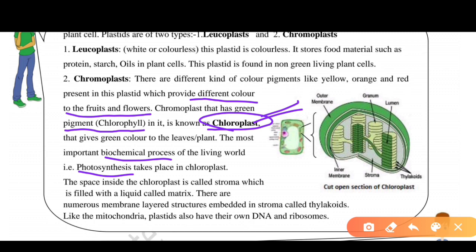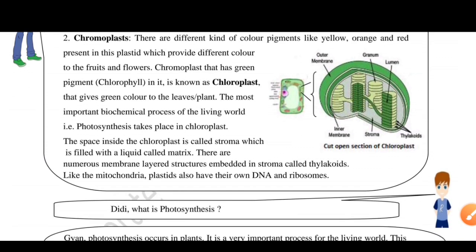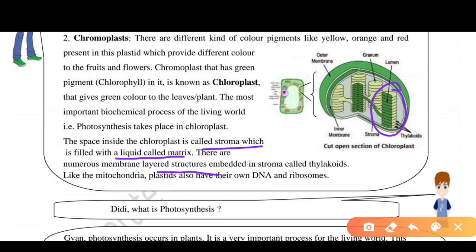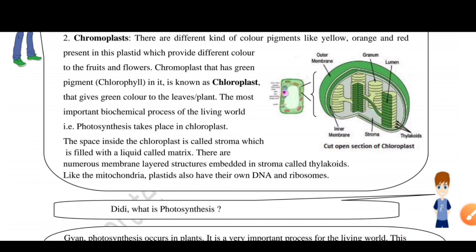There is a space inside the chloroplast called the stroma, which is filled with a liquid matrix. There are numerous membrane-layered structures embedded in the stroma called thylakoids. Importantly, both mitochondria and plastids have their own DNA and ribosomes, making them two cell organelles which have their own DNA.